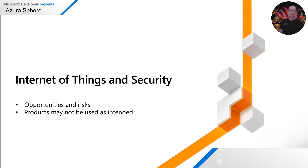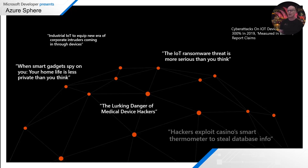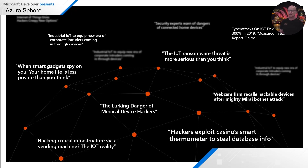IoT opens up enormous opportunities to really transform our lives, our communities, businesses and even government. But it also invites enormous risks. Connectivity is a two-way street and hackers are a creative, determined and cunning bunch, constantly changing their tactics. Barely a day goes by without some headline related to IoT security — baby monitors, toys, vacuum cleaners spying into families, heart pacemakers and cars being hijacked. None of us want to be building products that end up being used in ways we never intended.